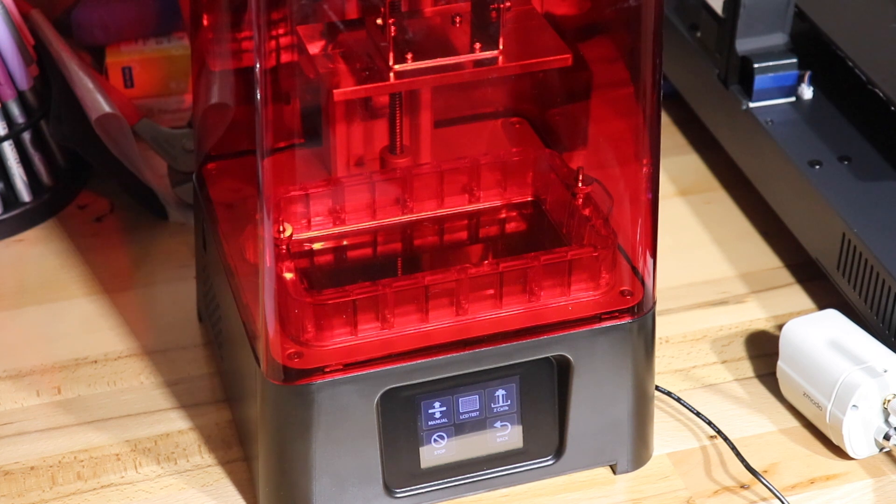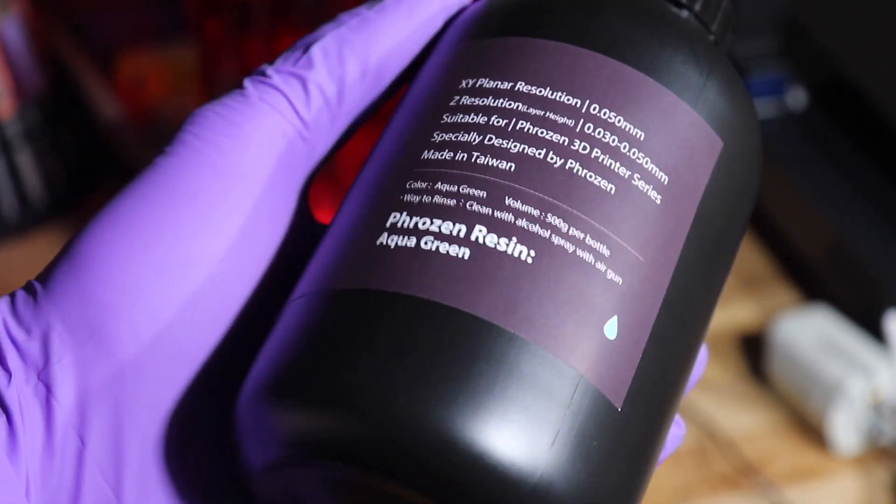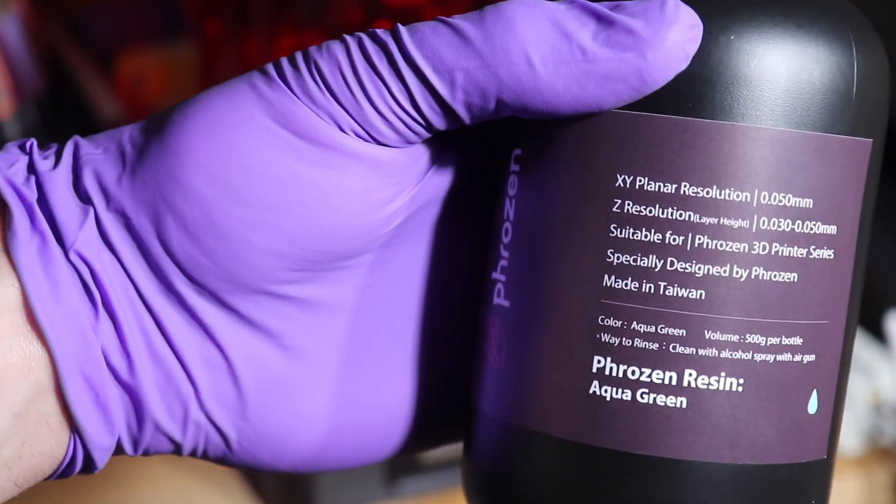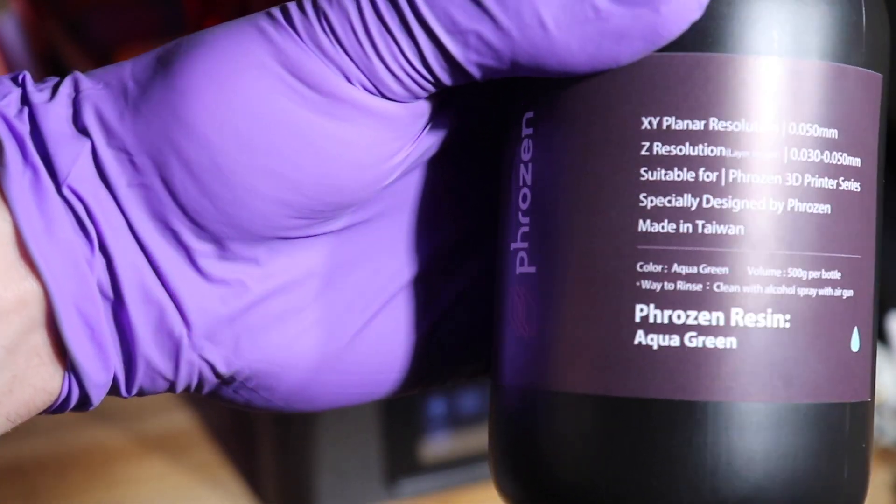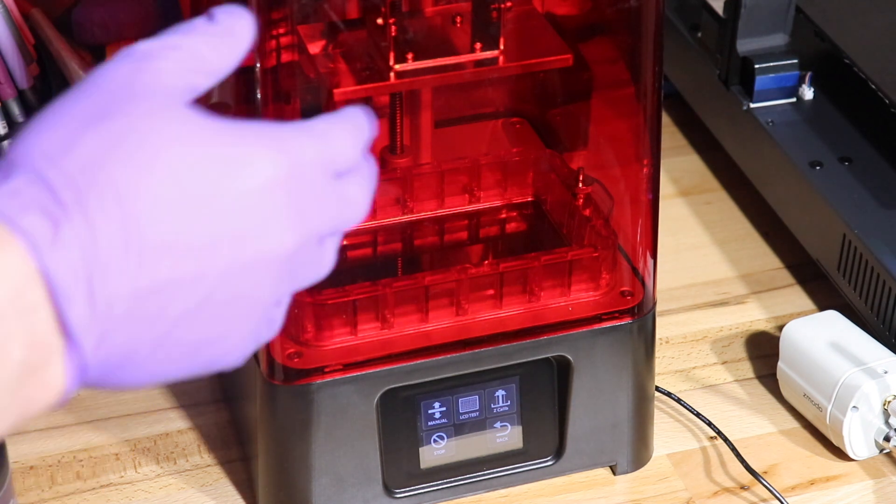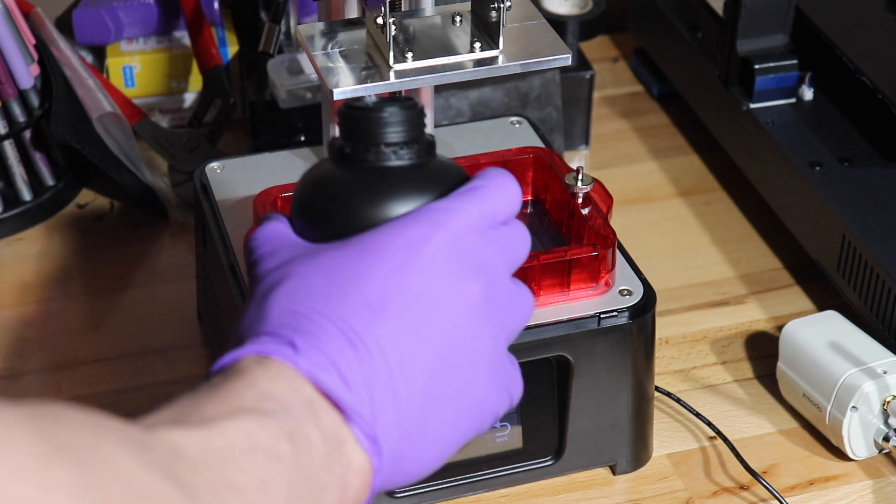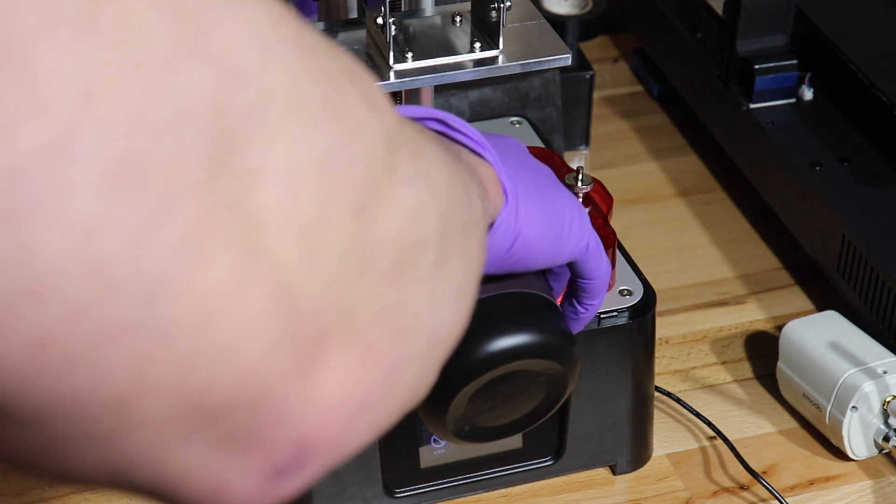Let's talk about some specs. It has a 2.8 inch touch panel, the slicer software is Chitubox, the printer volume is 4.7 by 2.6 by 5.1 inches. This is the Phrozen resin. Anytime you're messing with resin, I suggest you wear gloves and a mask - the stuff is pretty strong, you don't want to get it on your skin or breathe the fumes.